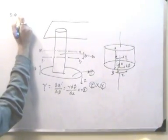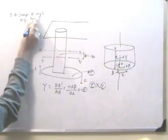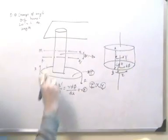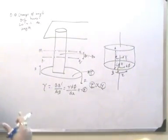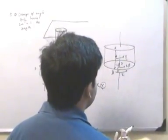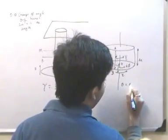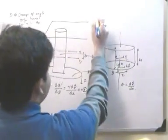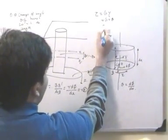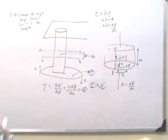Theta refers to the change of angle of twist with respect to the length of the shaft — how much the plane has moved with respect to the original plane over length dx. So theta equals dφ/dx. Therefore, tau equals G times gamma, and gamma equals G times r times theta, or G times r times dφ/dx. Here G is the shear modulus.